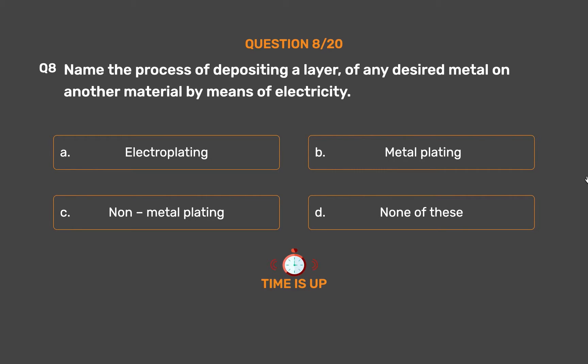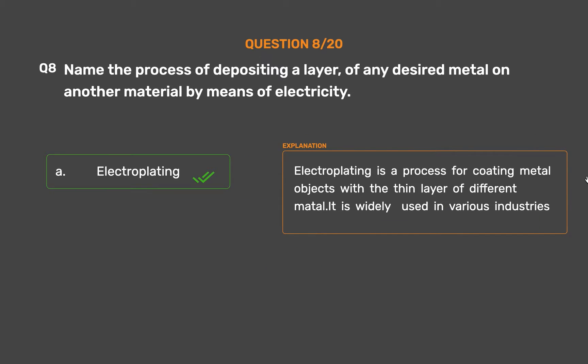The correct answer is Option A: Electroplating. Electroplating is a process for coating metal objects with a thin layer of a different metal. It is widely used in various industries.